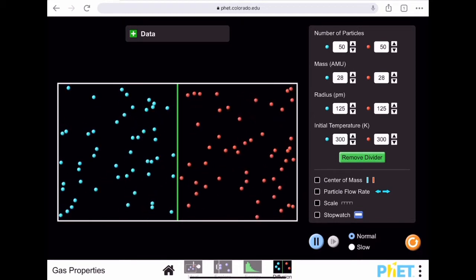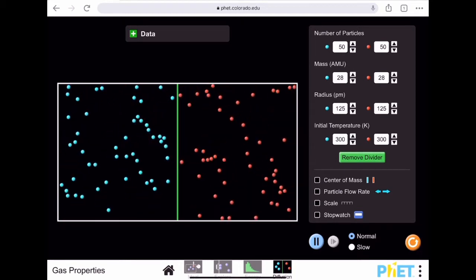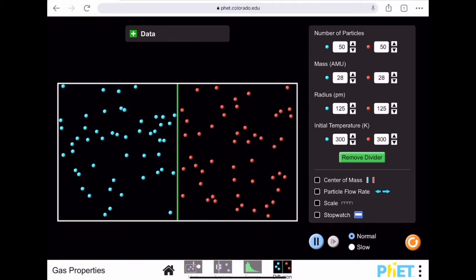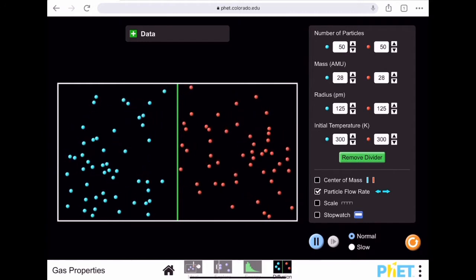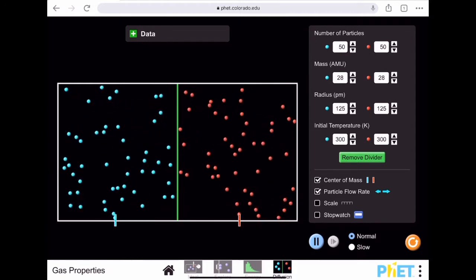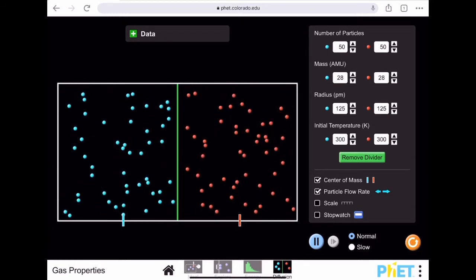instead of having a hole between these particles like with effusion, with diffusion we're just going to open up the barrier between the two. We're going to see how they mix. I'm also going to track particle flow as well as center of mass. That helps you keep track of how well they're mixed. I'm going to remove the divider.